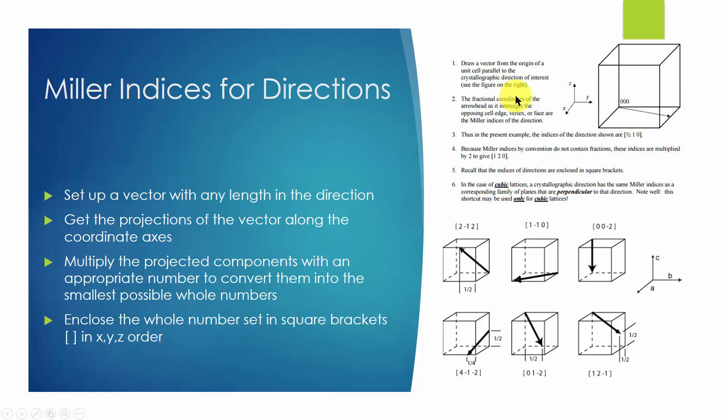We then multiply these numbers by 2, so the results will be a set of the smallest possible whole numbers. Thus, we get 1, 2, 0. We then enclose them inside a pair of square brackets.